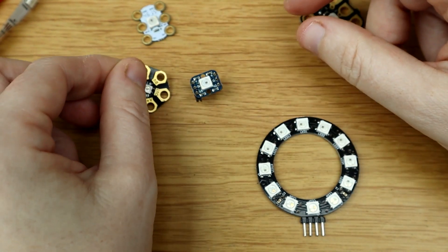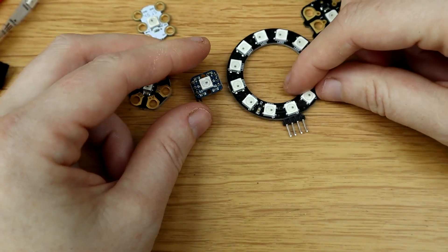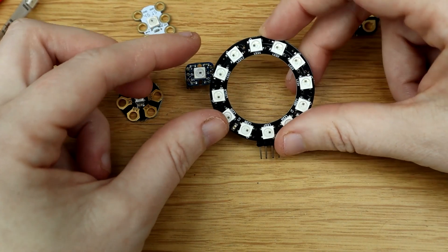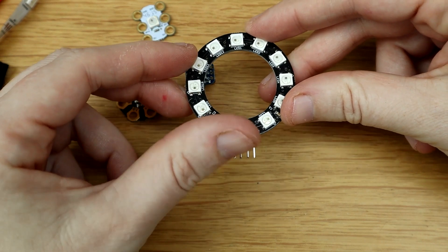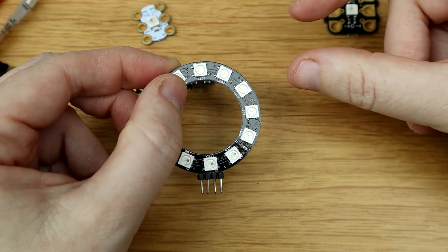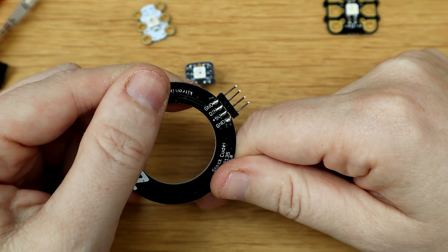Then we have another zip from Katronic. This is a circle, not chainable, but they do have smaller strips that are chainable. So you see there's no out. It's just got two grounds and data in there.